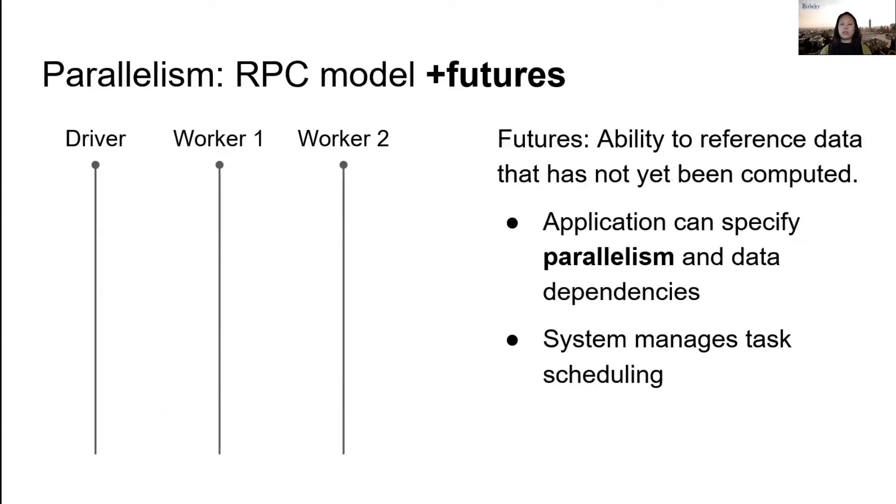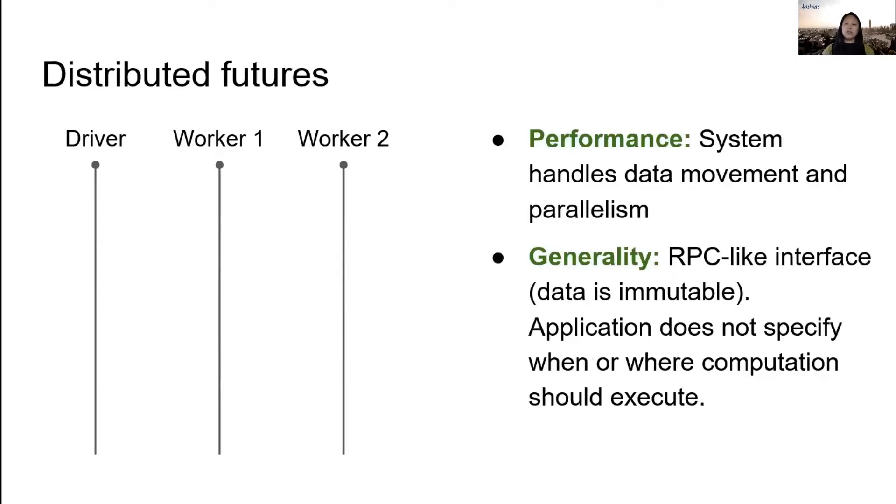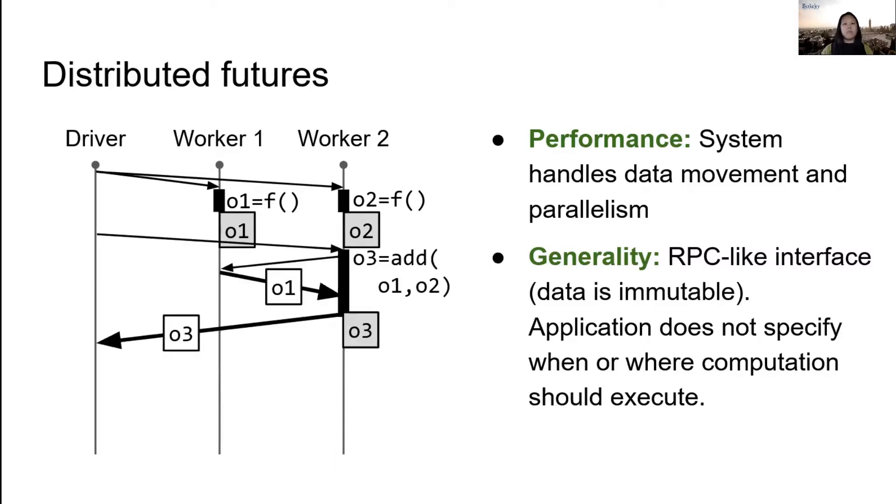Ideally we also want the two f tasks to execute in parallel. Many RPC systems support this with futures, so that another function can be invoked while a previous result is still pending. In our example, instead of having to wait for the first task to finish, the caller will immediately get back a future that it can use later on to get the value of o1. In the meantime, the caller submits the other f task, which the system can now execute in parallel with the first. The caller can also pass the return futures into the add task before o1 and o2 have even been computed. Then as soon as the values are ready, the system sends the downstream task. Distributed futures combine these two ideas. Now we can execute tasks in parallel and the return futures also act as references to distributed memory.